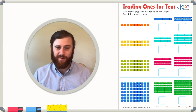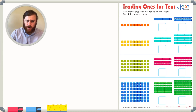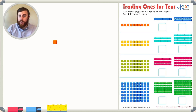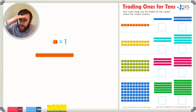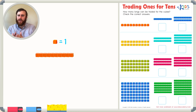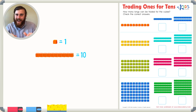Before we get started, let's review some really important information to help us complete this worksheet. First, do you remember how much one cube is worth? Well, one cube is worth one — it represents the number one. The next base-10 block is the long. If you look really closely at the long, you'll see that there are 10 small cubes inside. So the long represents 10.